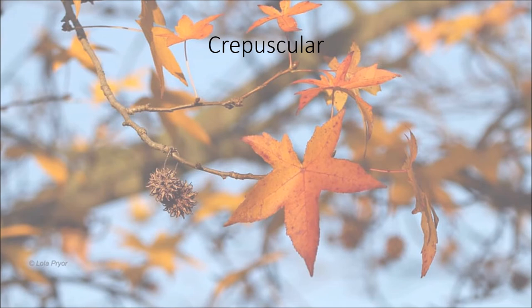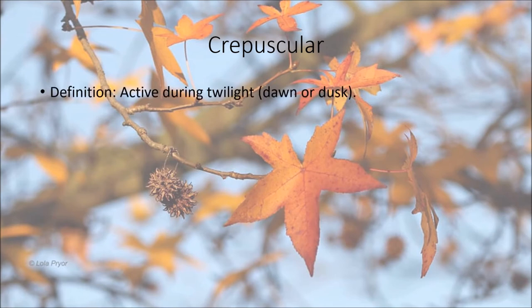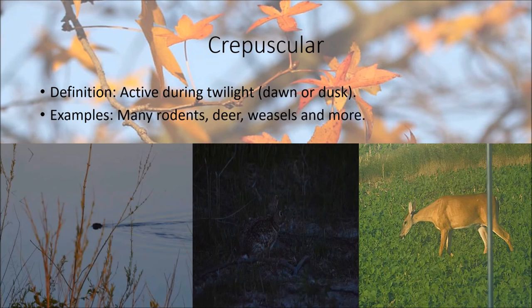Next we have crepuscular. This is probably a term you haven't heard much — it wasn't mentioned in schools a lot when I was growing up. Basically, it means organisms that are active during twilight, at dawn or dusk. We have many examples of crepuscular organisms in Ohio and Marion County. A lot of our rodents are crepuscular, and one famous example in Marion County is the beaver. We have beavers at Marion Tallgrass Trail, and the best time to see them is during dawn or dusk. Other examples include deer, weasels, and lagomorphs like rabbits.